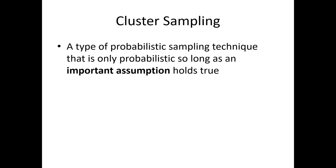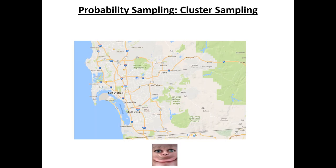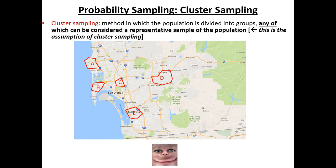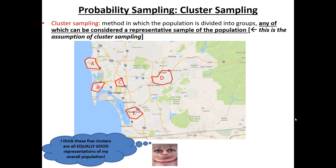Cluster sampling is a type of probabilistic sampling that only works as probabilistic sampling as long as an important assumption holds true when we conduct it. In this example of cluster sampling, we divide the population into groups. The argument we're making is that each one of the groups is a good, fair representation of the total overall population. So if we think about San Diego County and these five potential clusters — La Jolla (A), Ocean Beach (B), North Park area (C), El Cajon area (D), and the Chula Vista area (E) — this researcher is making the assumption that each one of these clusters is a fair representative sample of the entire San Diego region.